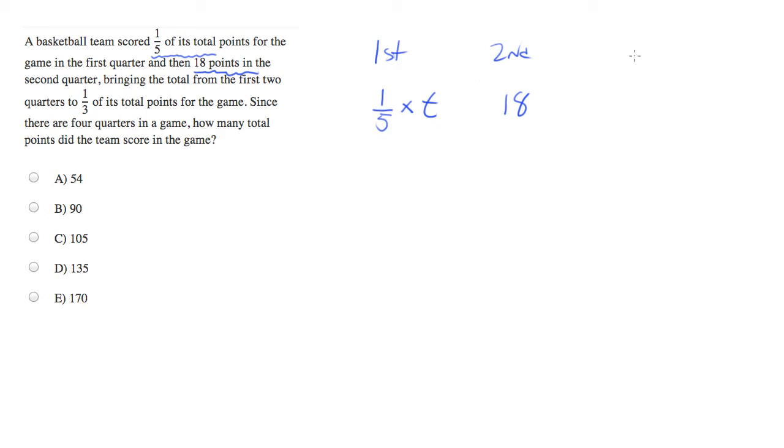And the total from the first two quarters is one-third of the total points for the game, so that's one-third, which becomes itself, of which becomes multiply, the same t, the total points in the game. For this label, I'm going to call this sum of first half.